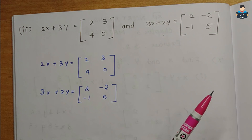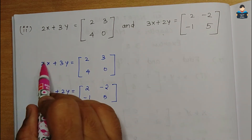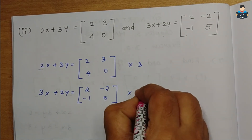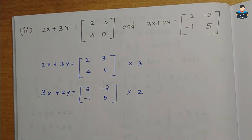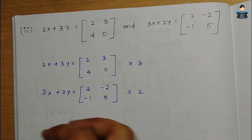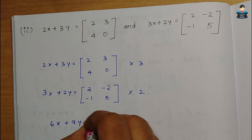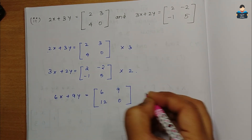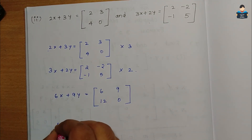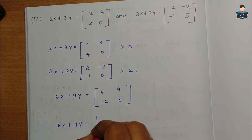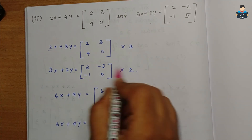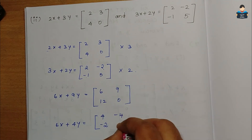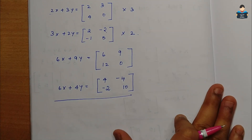Now, similar to how in normal linear equations we multiply to match coefficients — here one equation has coefficient 2 and another has 3 for x — we multiply the first equation by 3 and the second by 2 so the x values become the same. Multiplying the left-hand side: first equation gives 6x plus 9y, with right-hand side 3 into [[2,3],[4,0]] giving [[6,9],[12,0]]. Second equation multiplied by 2 gives 6x plus 4y, right-hand side [[4, minus4],[minus2,10]].